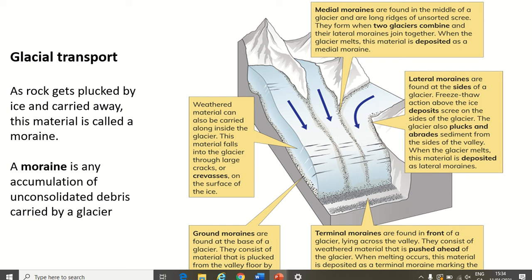The second type is a medial moraine, found in the middle — M for medial, M for middle. A medial moraine forms when two glaciers meet. We've got one glacier here and another glacier here, and they meet past this mountain peak. When this lateral moraine and this lateral moraine meet in the middle, they form a medial moraine. So a medial moraine forms when two glaciers meet and their lateral moraines combine.